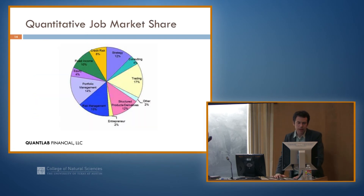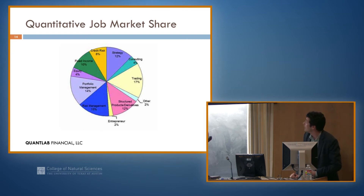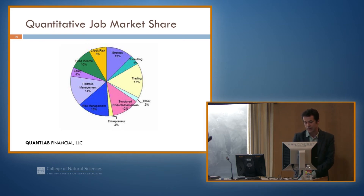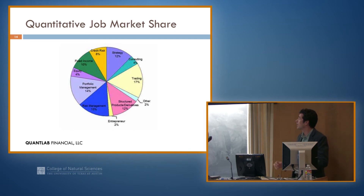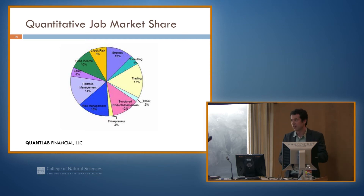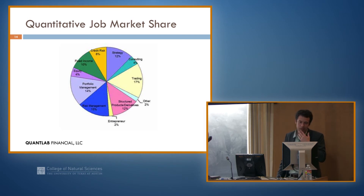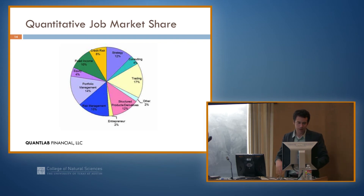This picture gives a general idea of where the jobs are in this area. There are big chunks in a lot of different areas: trading companies, derivative pricing, risk management — there are quantitative ways to analyze the risk a company might have. There's also quantitative portfolio management, which is combining your assets to maximize something. Fixed income is bond traders, and credit risk is the infamous one with things like mortgage-backed securities.